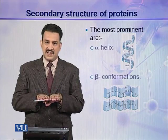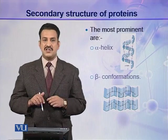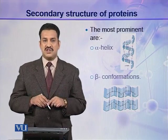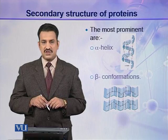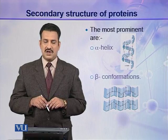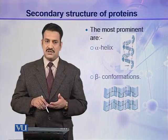Alpha helix and beta sheets are the prominent secondary structures found in different protein molecules.